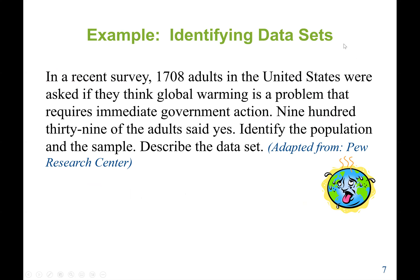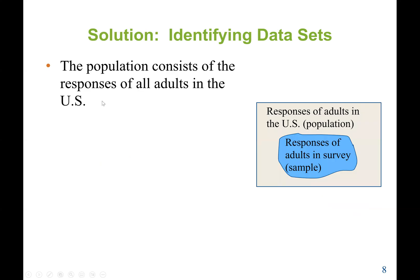Here's an example: we should identify what type of data set is described — population or sample. In a recent survey, 1,708 adults in the United States were asked if they think global warming is a problem that required immediate government action, and 939 of the adults said yes. The population consists of all the responses of all adults in the U.S. The responses of adults in the survey will be the sample.